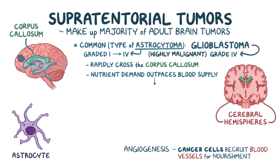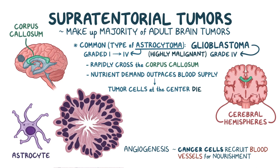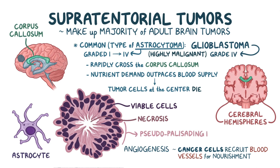As a result, because the blood supply serves the peripheral tumor cells first, the tumor cells at the center die first because they're the furthest from the blood vessel network. Meanwhile, the remaining viable tumor cells collect along the edges of the necrotic regions. Histologically, it appears like the viable cells are lining up like fence posts against the necrosis in the middle, producing a characteristic pseudopalisading pattern.